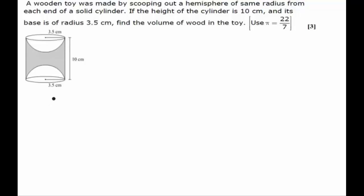We first draw the diagram, so it's a cylinder with two hemispheres scooped out from each of the ends. The wood that is left is the gray part. We have to find out the volume of this gray part. First of all, we will see that the height of the cylinder is equal to 10 centimeters and radius is equal to 3.5 centimeters for the cylinder as well as the hemispheres.